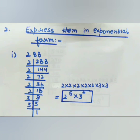We keep dividing until we get 1 as the final value. Counting how many times 2 appears: it comes 5 times, so we get 2 to the power of 5. And 3 appears 2 times, giving 3 to the power of 2. So in exponential form, 288 equals 2 to the power of 5 into 3 to the power of 2.